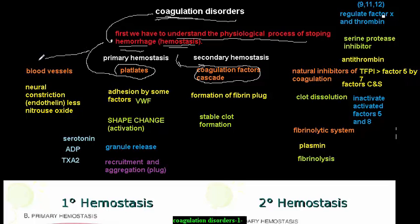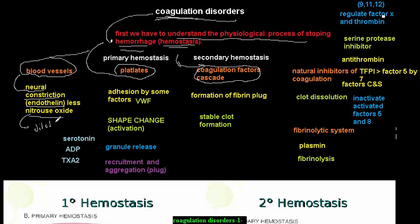We also have other factors like blood vessels. When we bleed we have a kind of vasoconstriction to limit blood leaking from the torn vessel. There is neural constriction in the blood vessels due to the effect of endothelin and reduced nitric oxide. Nitric oxide normally dilates blood vessels and endothelin constricts. In hemorrhage, we lose a lot of nitric oxide and have more endothelin, which constricts the blood vessels so that we lose less blood.